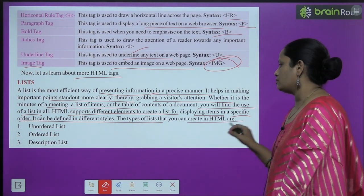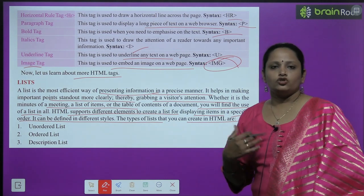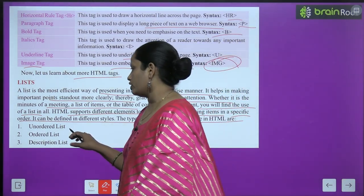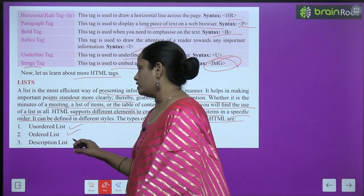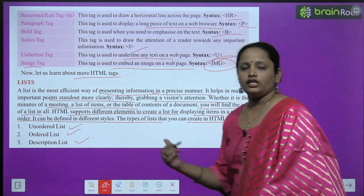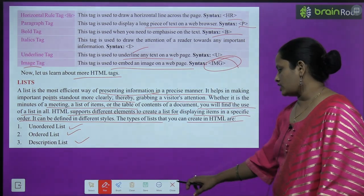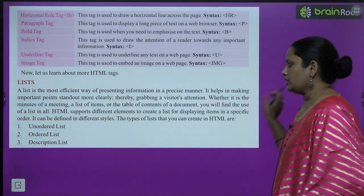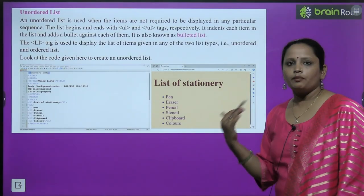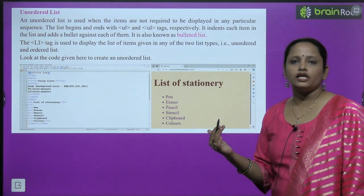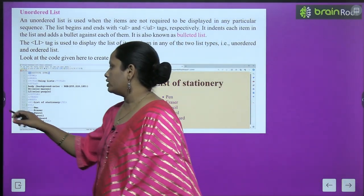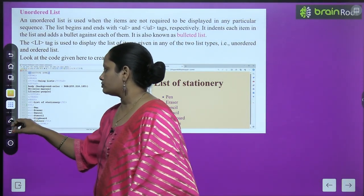The types of list that you can create in HTML are: unordered list, ordered list, and description list. These are the three types of lists we can make in HTML. Now let's read what each of these three lists are. The first is unordered list.